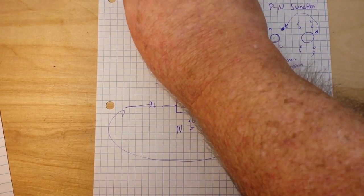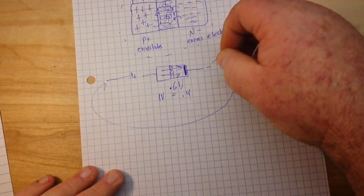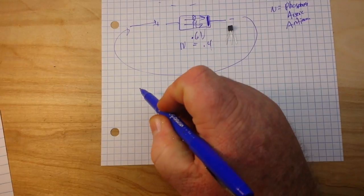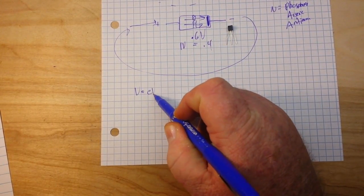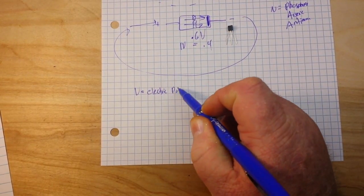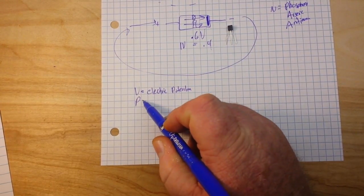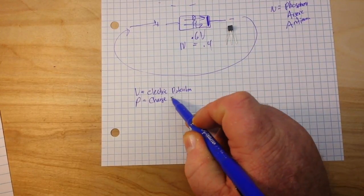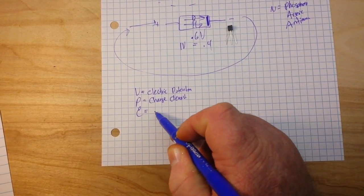So how does all this get together and next becomes the basis of the transistor? Well, if we say that V is our electric potential, and the little p is our charge density, and we have our permittivity,